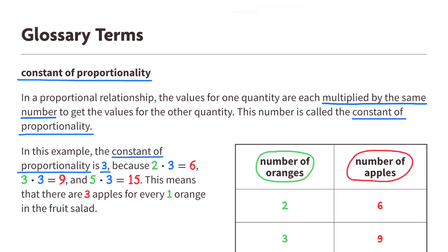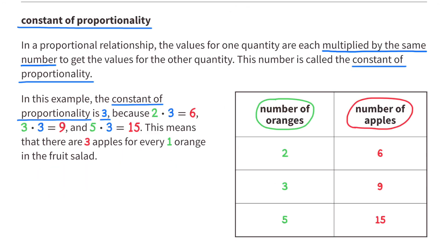In a proportional relationship, the values for one quantity are each multiplied by the same number to get the values for the other quantity. This number is called the Constant of Proportionality.